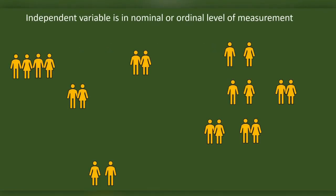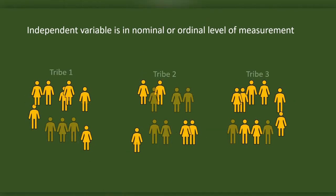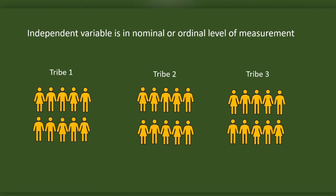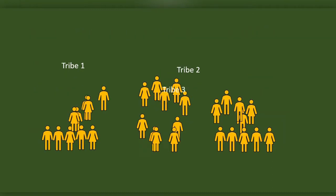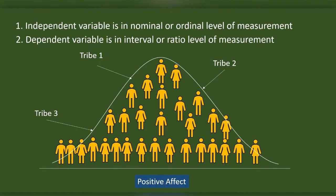We can do one-way ANOVA if the independent variable is in the nominal or ordinal level of measurement or are categorical in nature with three or more categories. For instance, imagine we are doing research in a sample from three different tribes. We plan to find out if three tribes are different in their positive affect.